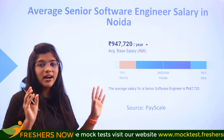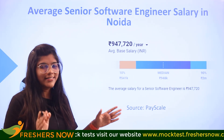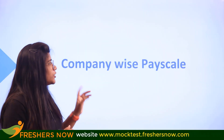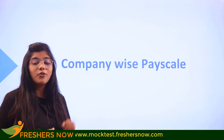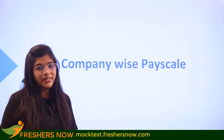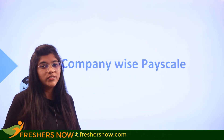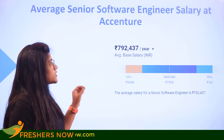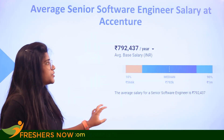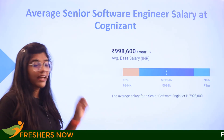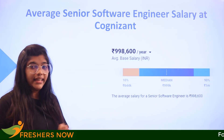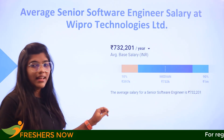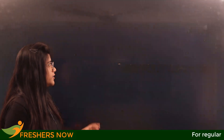Now that you understand the pay across major locations in India, let's look at how major companies pay senior software engineers. Accenture pays 7 lakhs 92,000 per annum; Cognizant pays 9 lakhs 98,000 per annum; and Wipro pays 7 lakhs 32,000 per annum.